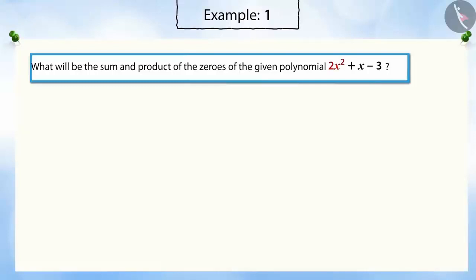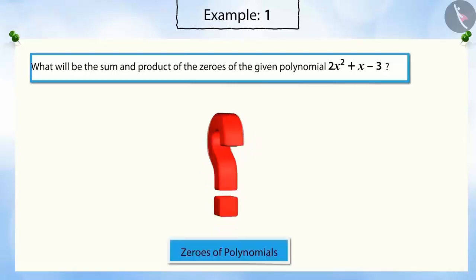What will be the sum and product of zeros of a given polynomial, 2x² + x - 3?